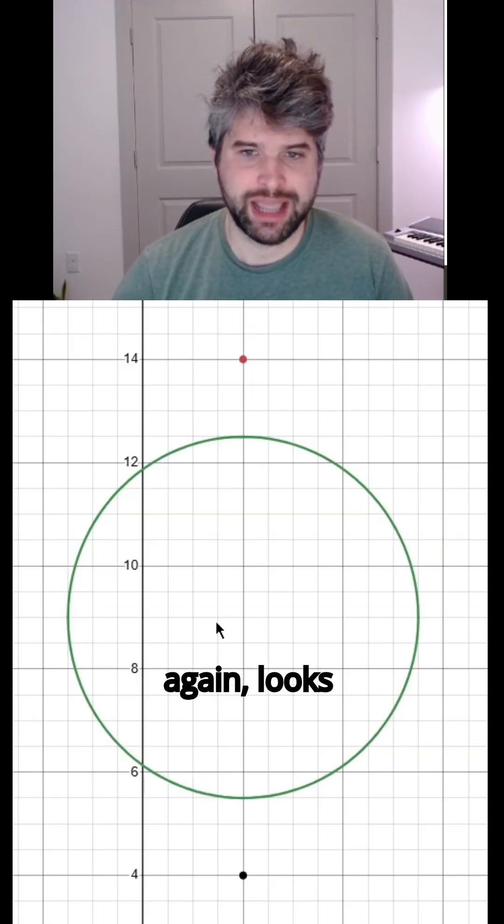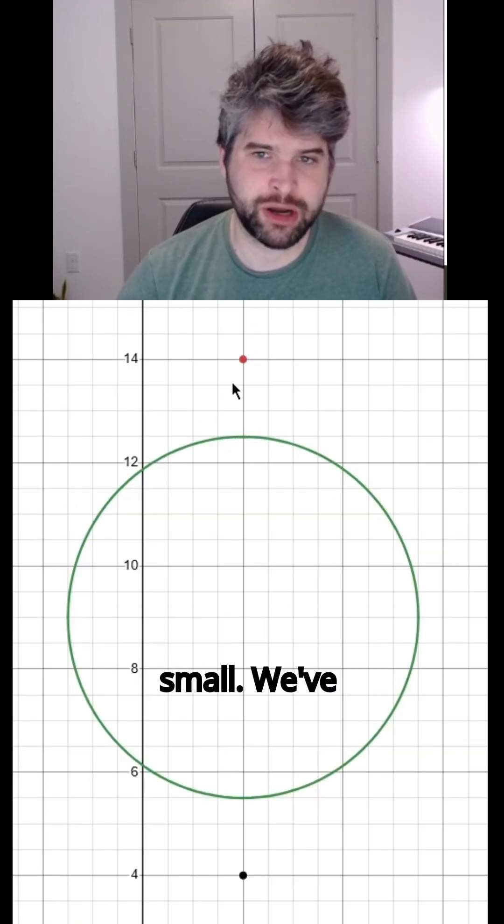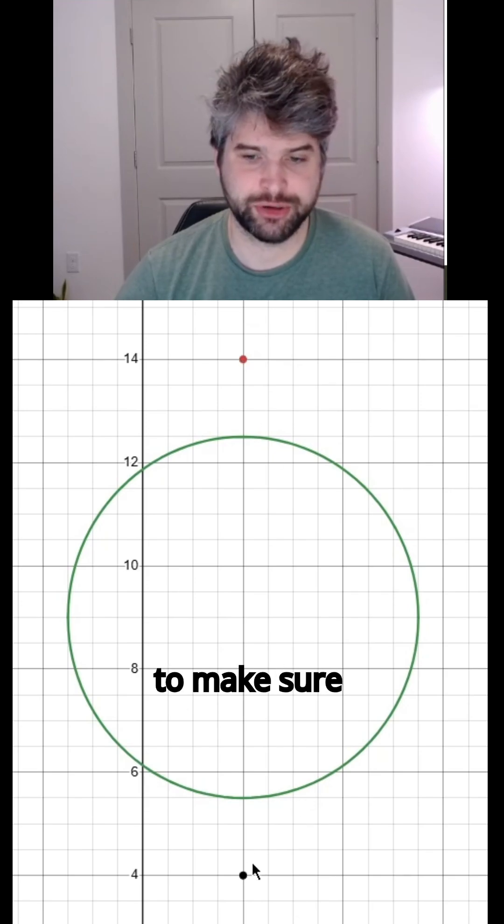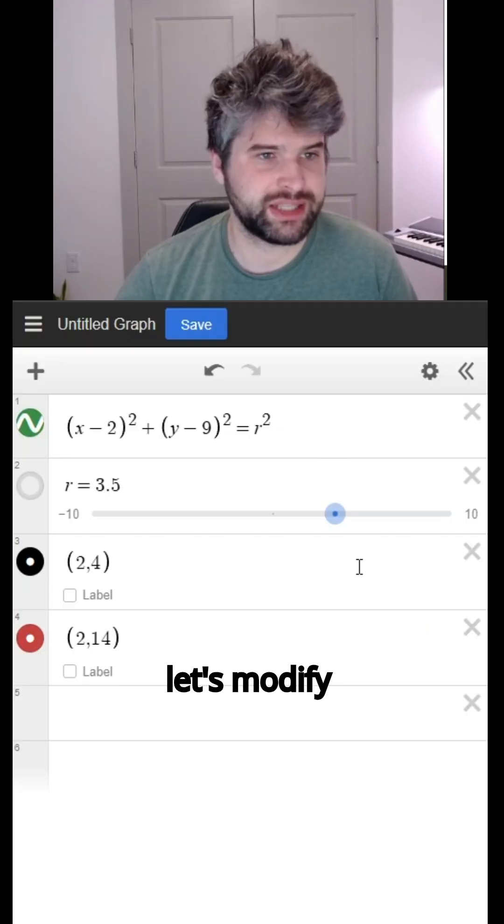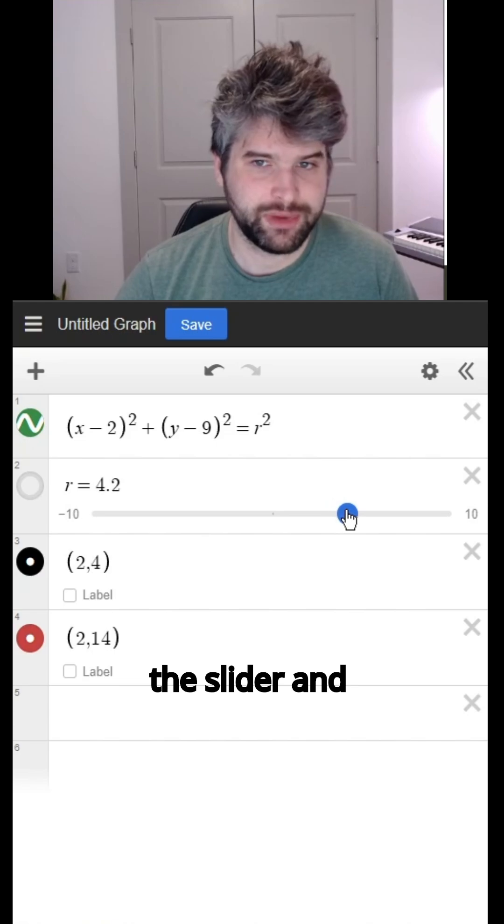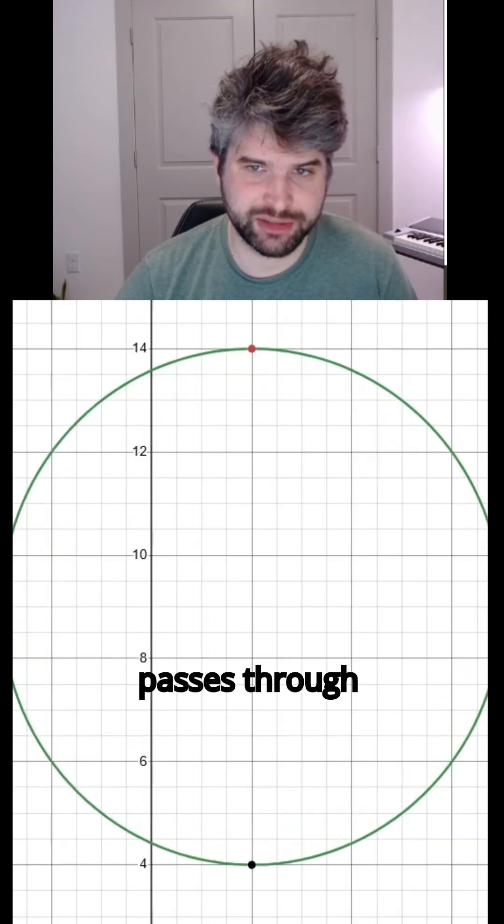If we look at our graph again, it looks like our circle's a little bit too small. We've got a point here and here that we need to make sure that our circle passes through. So let's modify the slider and make our circle grow until it passes through those points.